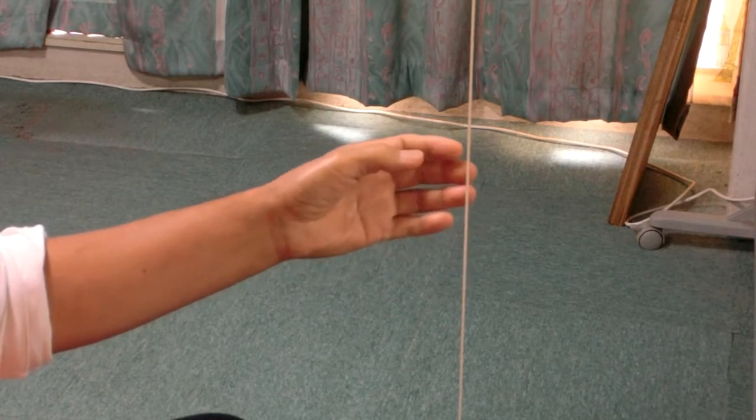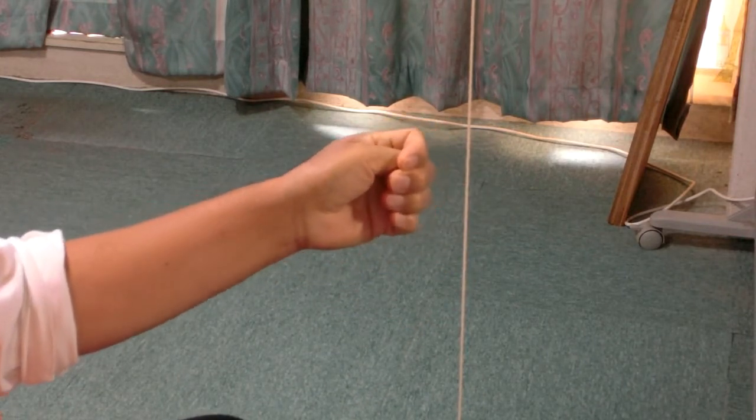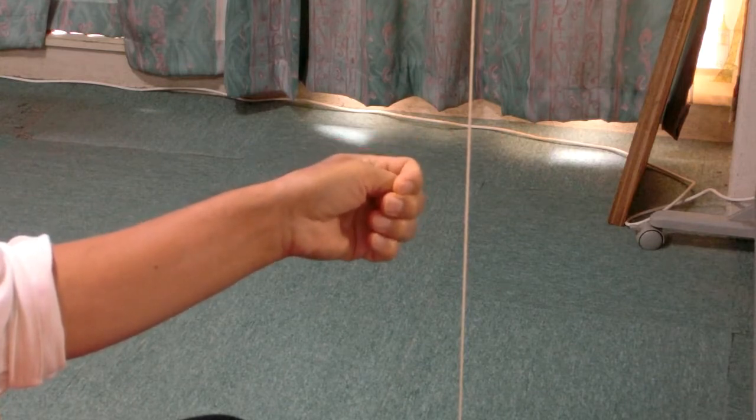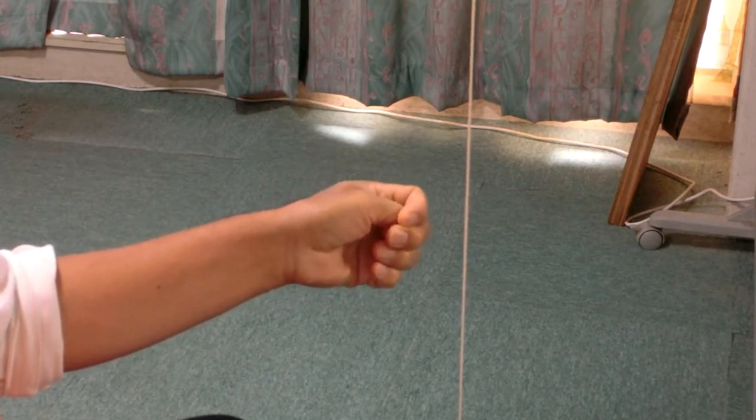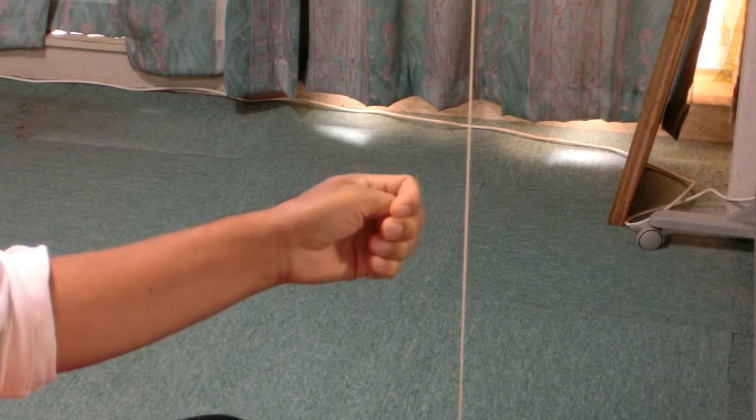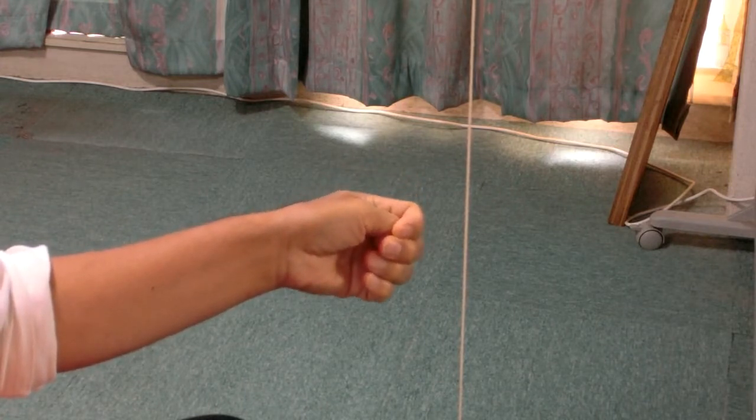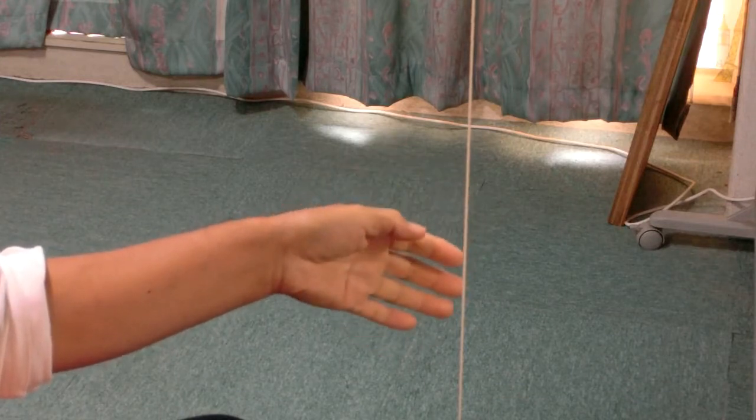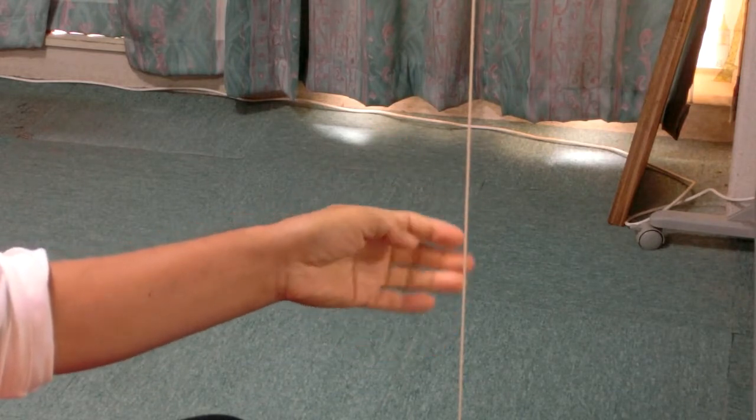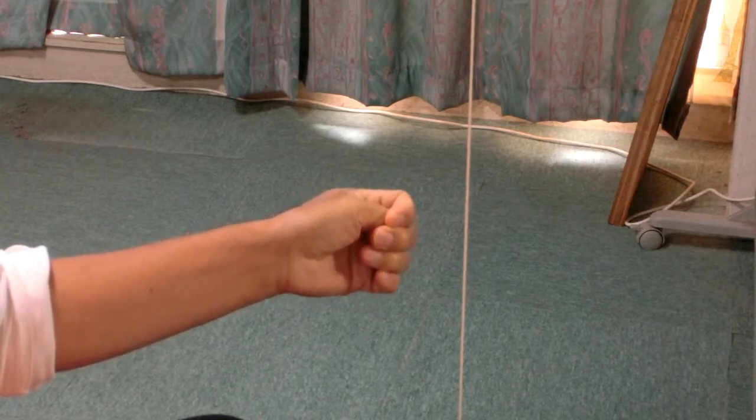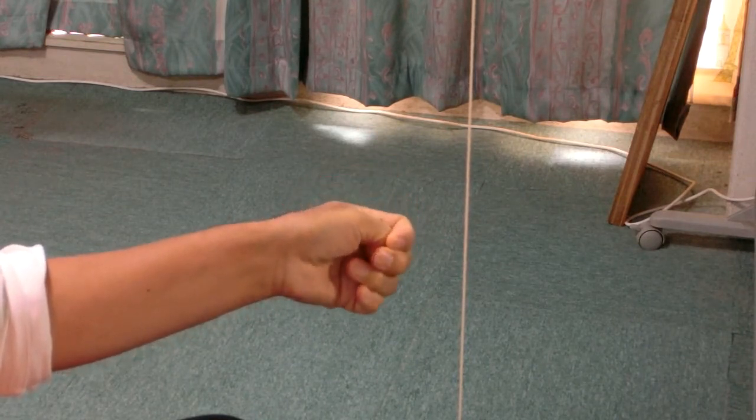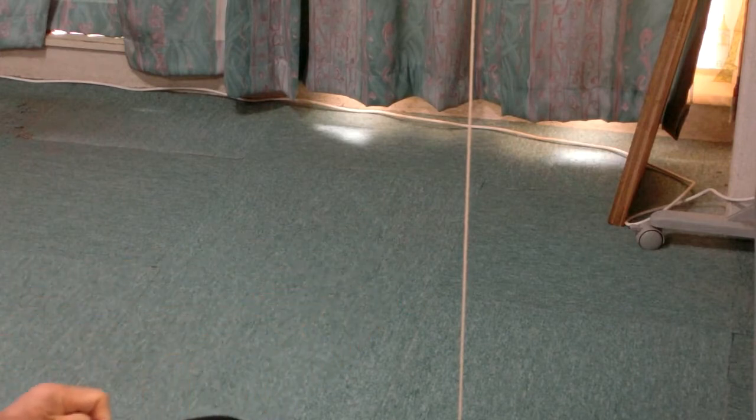Now make a fist with the thumb inside of the fingers. Do the same movement. Notice how little the fingers go down. The thumb is limiting the movement of the fingers and the wrist. Leave it alone and rest with the arm long by the side.